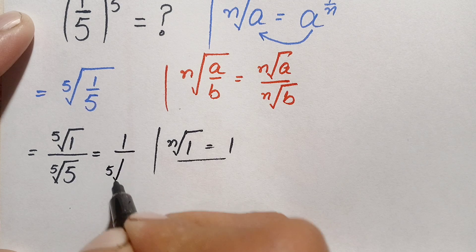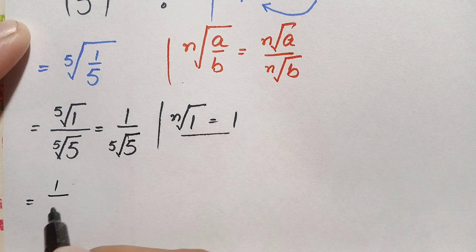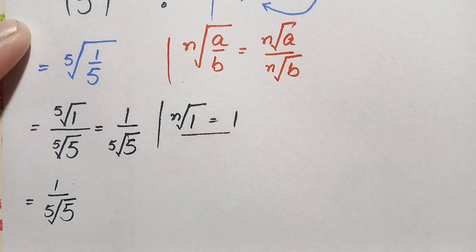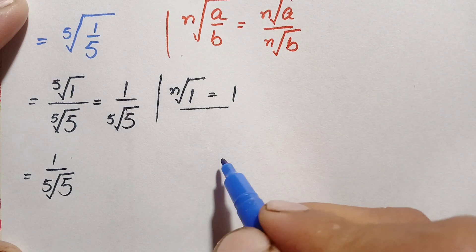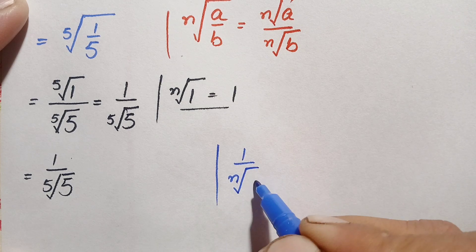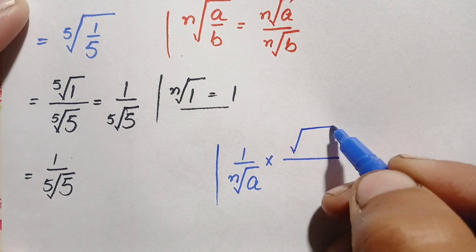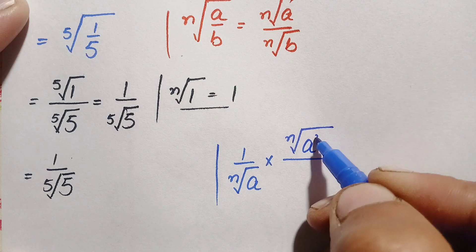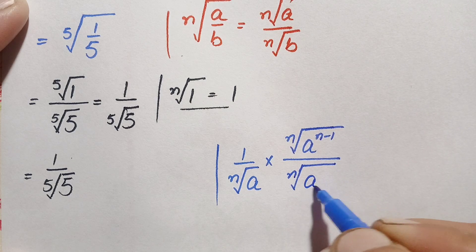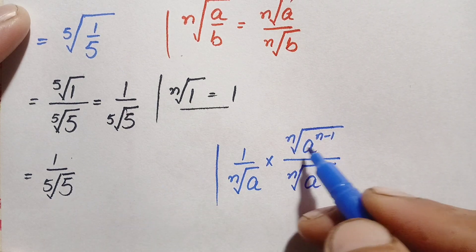So we replace the fifth root of one with one, giving us one over the fifth root of five. Next, we will use another result: one over the nth root of a. We multiply and divide by the nth root of a raised to the power n minus one. So this becomes the nth root of a raised to the power n minus one in both numerator and denominator.